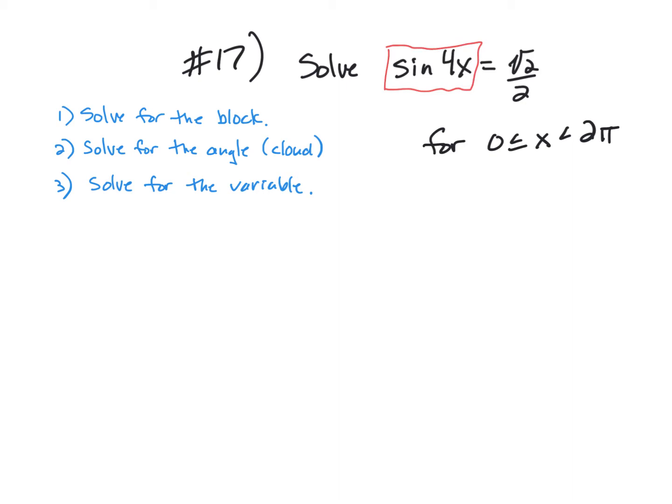So let me rewrite it down here. The sine of 4x equals radical 2 over 2. So the next thing is to solve for the angle. This is the angle, which if there's more than just an x there, we're going to put a cloud in there. So we're going to solve for the cloud. We have to say the sine of what is radical 2 over 2. So if I look at my unit circle, sine is the y-coordinate, and when it's radical 2 over 2, we're at π over 4,